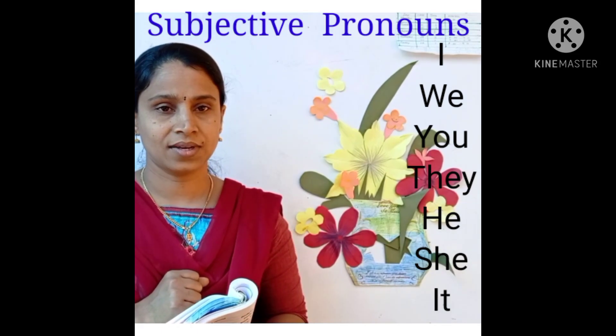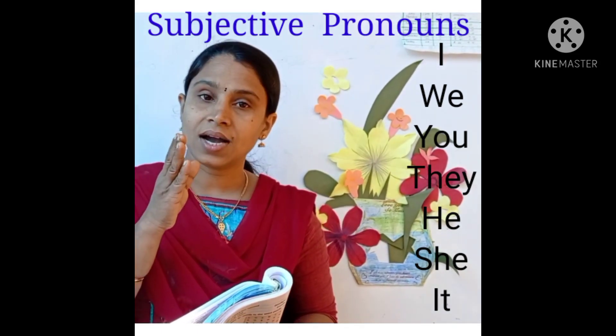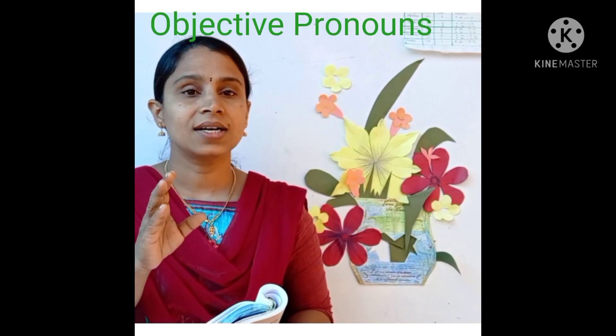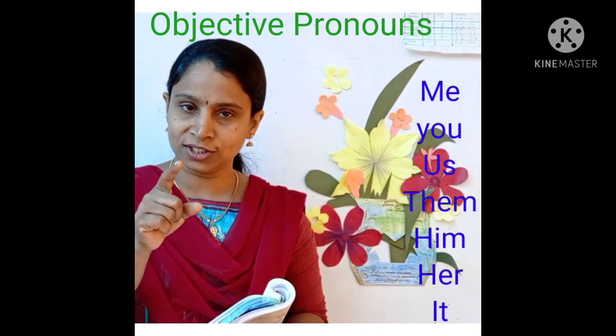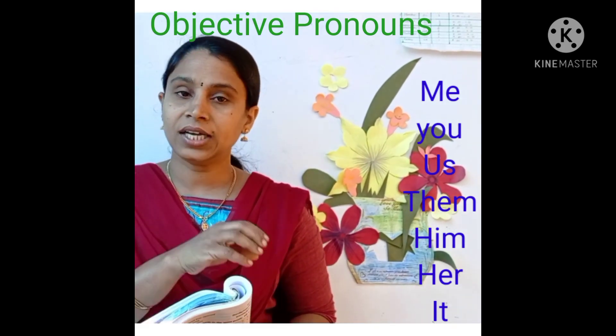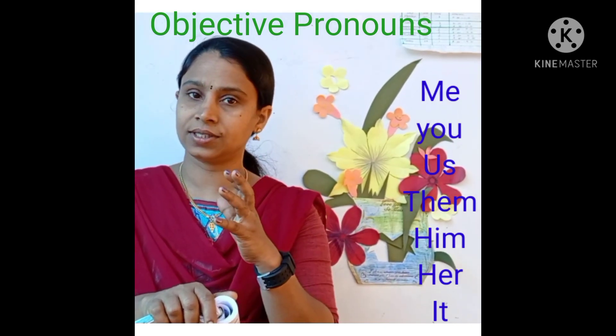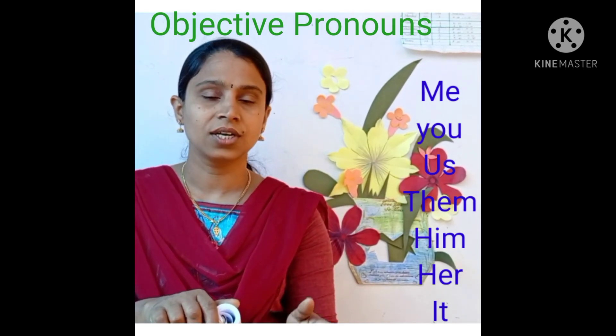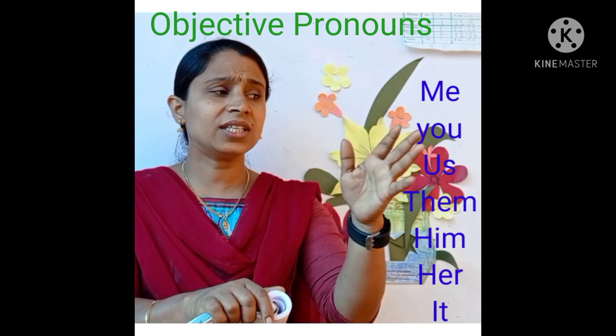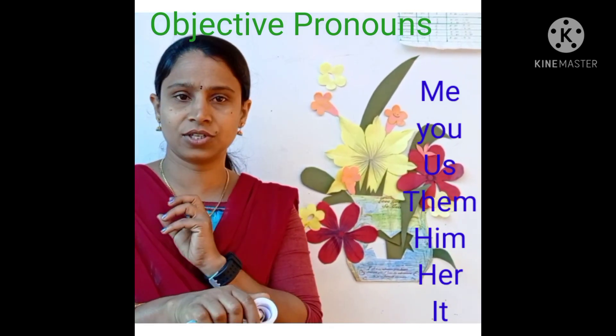Objective pronouns are: me, you, them, us, him, her, it. Note that 'it' can be used both as a subjective and objective pronoun. For example: 'It is raining heavily' — here 'it' is used as a subject. 'I looked at it' — here 'it' is used as an object. So 'it' can function as both a subjective and objective pronoun.